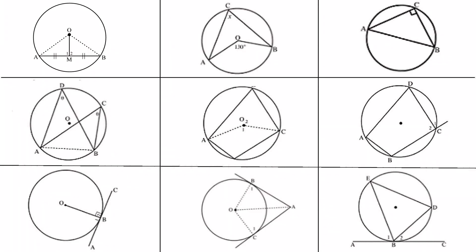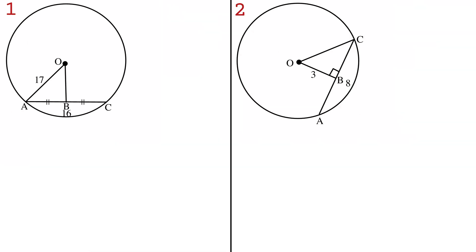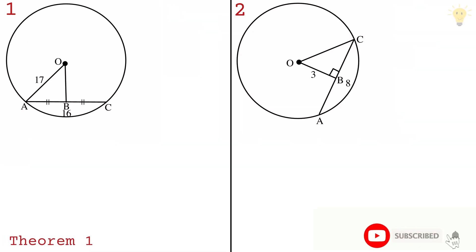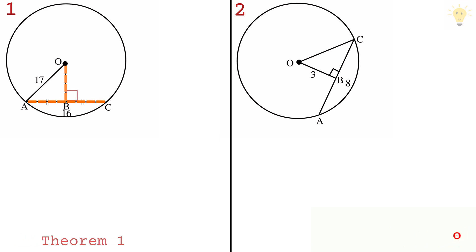Hi guys, today we are doing two examples from each theorem from Theorem 1 to Theorem 9. Theorem 1 basically states that the line segment joining the center of the circle to the midpoint of a chord is perpendicular to the chord.